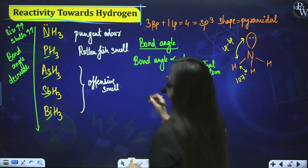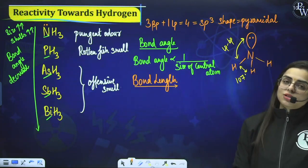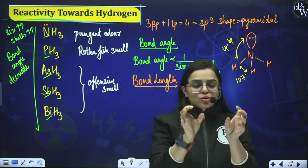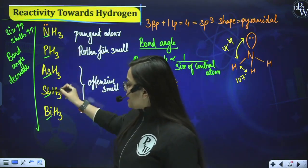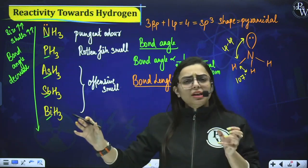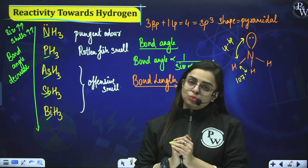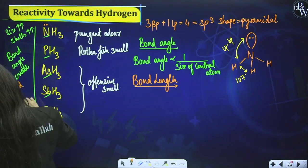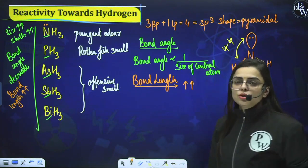What is the trend for bond length? When atoms are small in size, the bond length is small because atoms are close to each other. As you move down the group, the central metal atom size increases because shells increase. Hence, the bond length increases down the group due to the increase in size of the central metal atom.